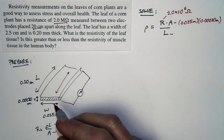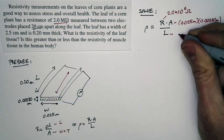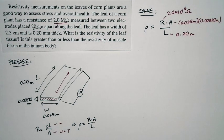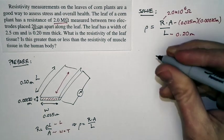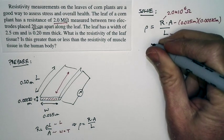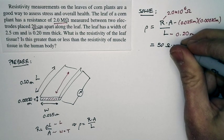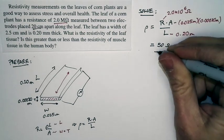The length is the distance between the electrodes. That's 0.20 meters. So we have everything we need to complete the calculation. And if we do that, we get a resistivity of 50 ohm meters. That's the resistivity that we get.